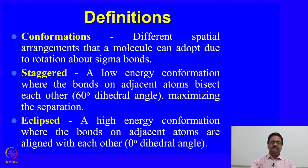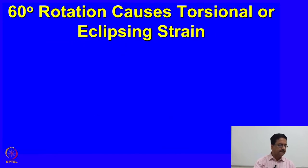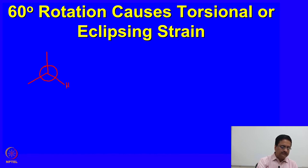In the last class we were talking about various conformations like staggered and eclipsed conformers. We understood that a staggered conformer is a low energy conformation and the eclipsed conformation is one of the high energy conformations. We will try to understand the same using some energy values. When you draw a Newman projection of the ethane molecule in the staggered conformation, this is the most stable conformation of ethane.